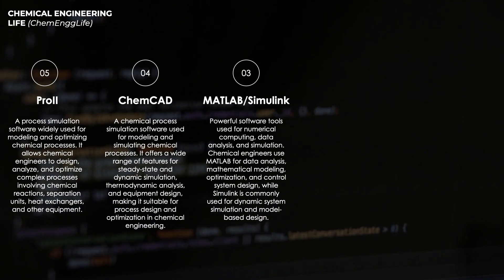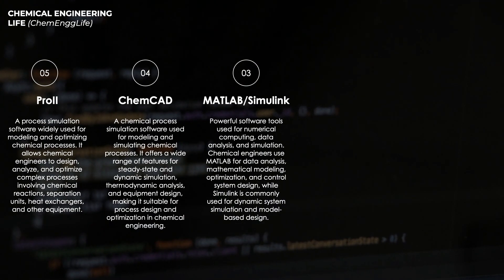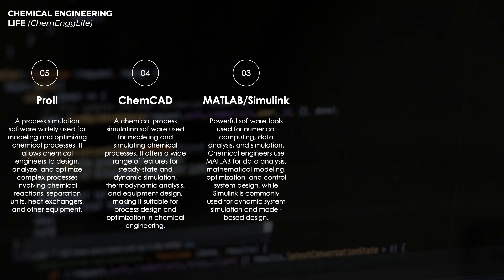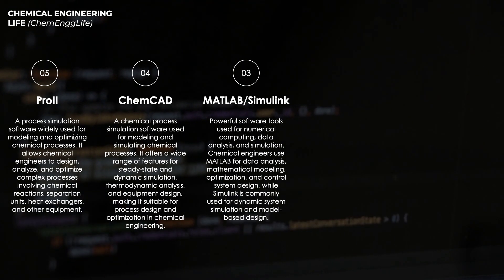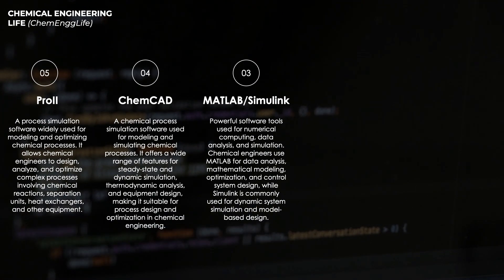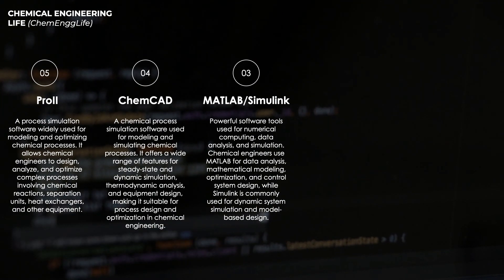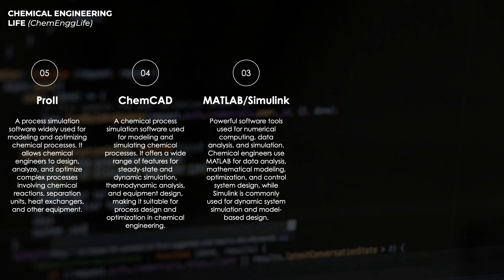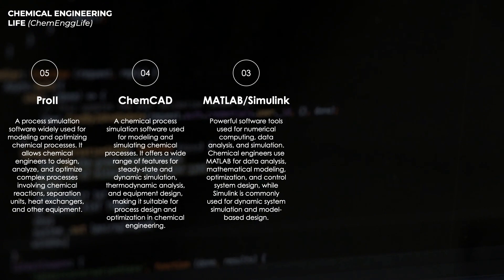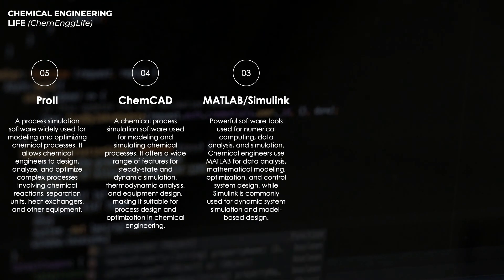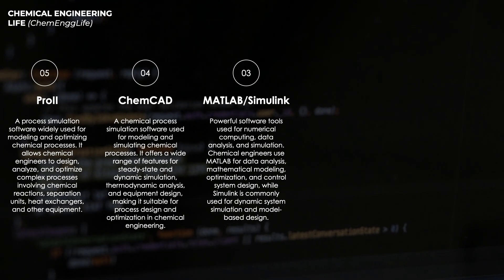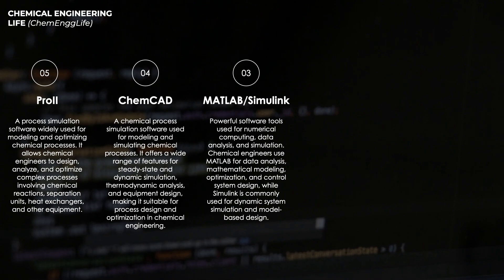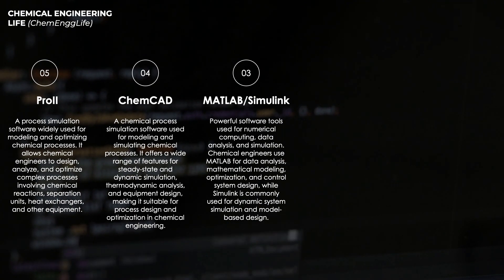MATLAB is a computational toolset widely used by chemical engineers for modeling, simulating, and analyzing dynamic systems. MATLAB offers a high-level programming environment for numerical computation, data analysis, and algorithm development, while Simulink provides a graphical interface for modeling and simulating dynamic systems using block diagrams. Chemical engineers utilize MATLAB and Simulink to develop mathematical models of chemical operations, simulate their behavior under different conditions, and design control strategies for optimizing process performance.